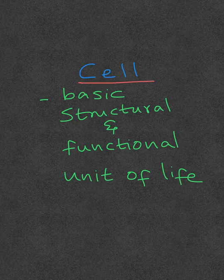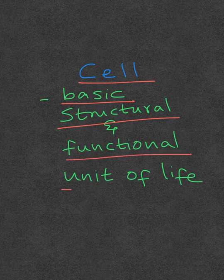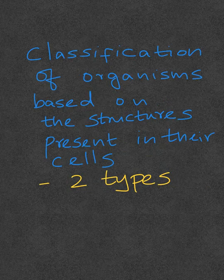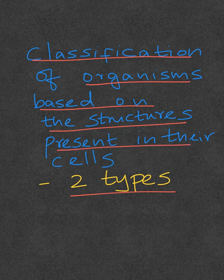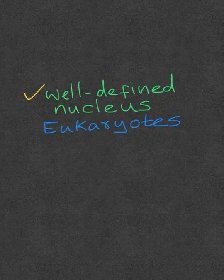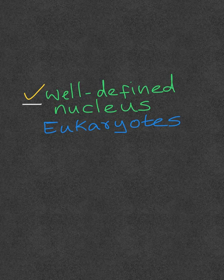A cell is the basic structural and functional unit of life. Organisms can be classified into two types based on the structures present in their cells. The organisms that have a well-defined nucleus are called eukaryotes.